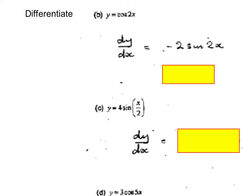Next, 4 is just a multiplier. It's not a function. So you're going to differentiate sine 1 over 2x. You're going to let u equals 1 over 2x. You're going to differentiate 1 over 2x, which is half.